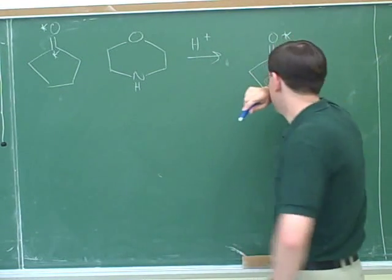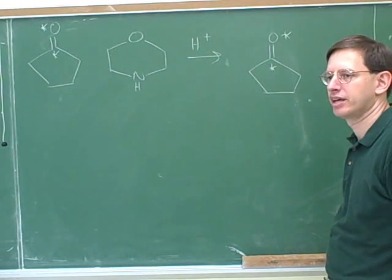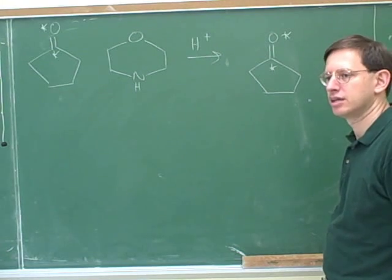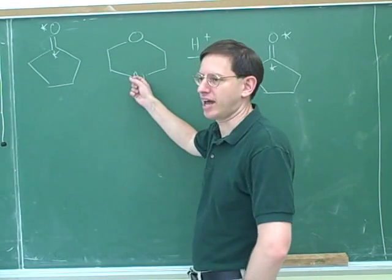So what you did here is you drew a category four attack. How do we know this is going to be a category four attack? Because we have a second degree nitrogen. Secondary amine. Right. Secondary amine. So it can't form an imine because it can only attack once.